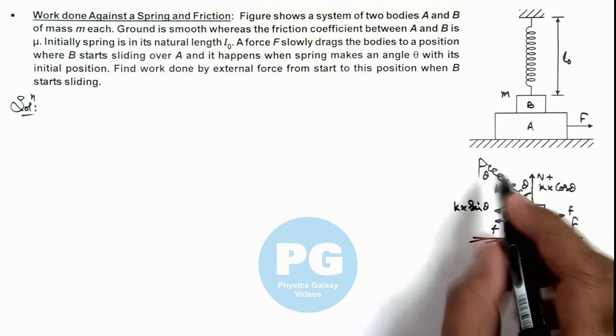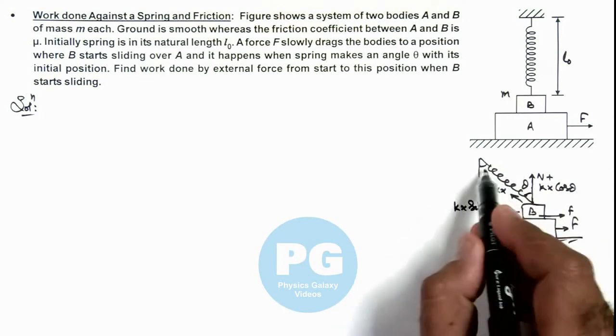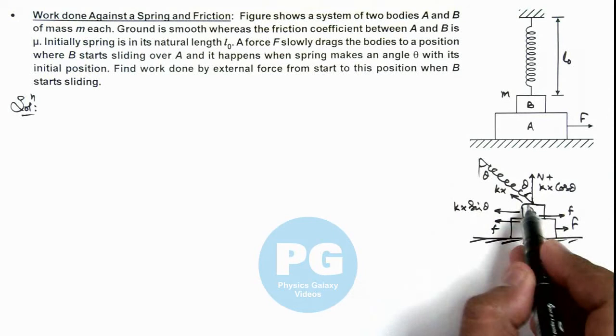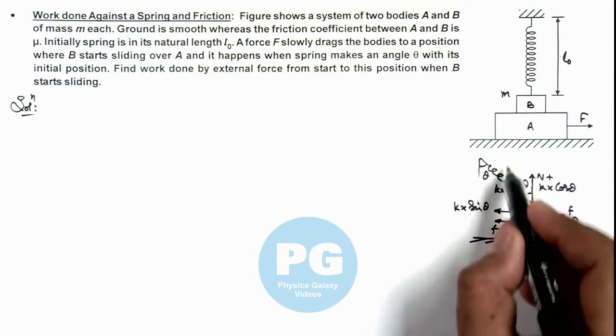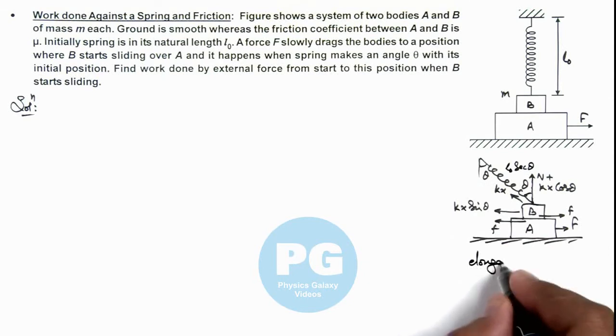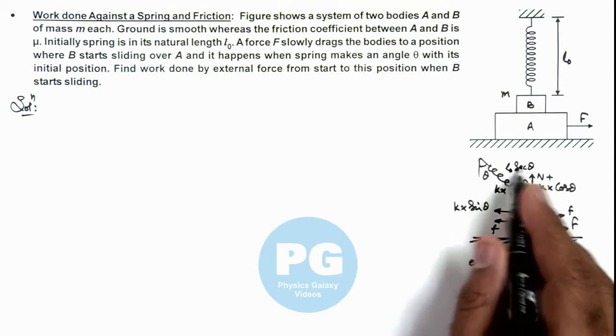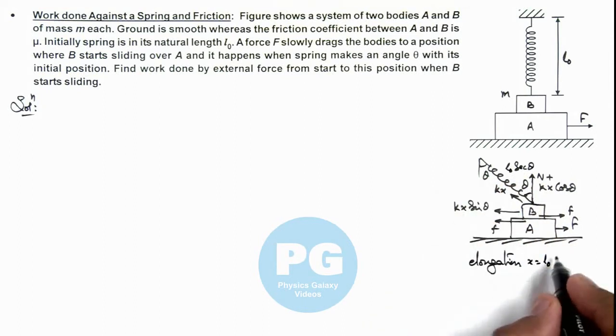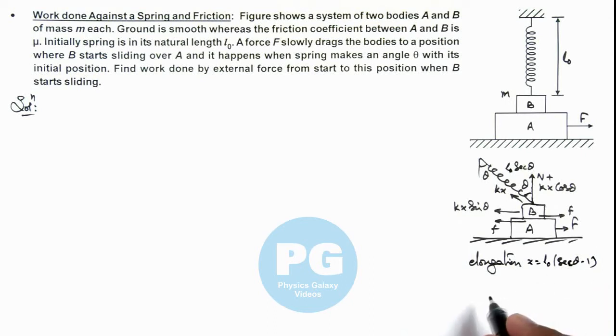As the natural length of spring was L₀ and this angle is θ, the length of spring has now become L₀ sec θ. So here spring elongation x can be given as L₀ sec θ minus L₀, so it is L₀(sec θ - 1). This is the elongation of spring.